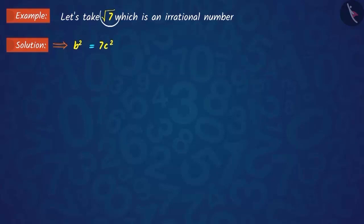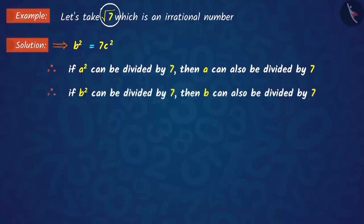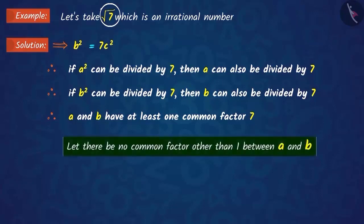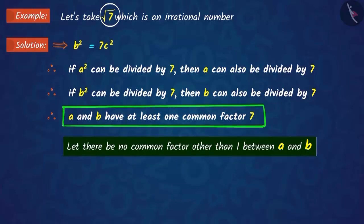According to the given irrational number √7, we get two results here. Thus, we know that a and b have at least one common factor, and that common factor is 7. Note that we had assumed that a and b do not have any common factors other than 1, whereas the opposite or contradiction of this is obtained.